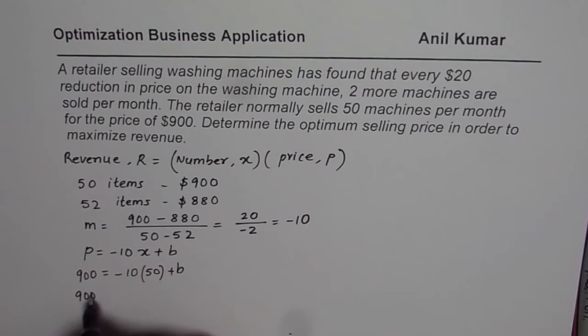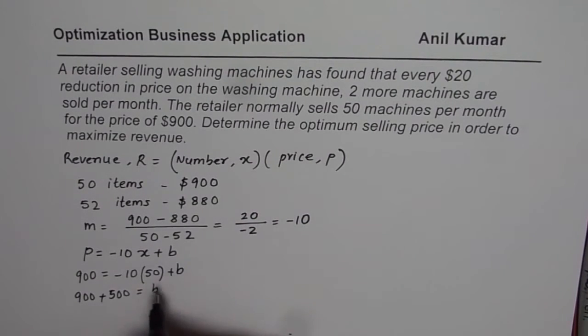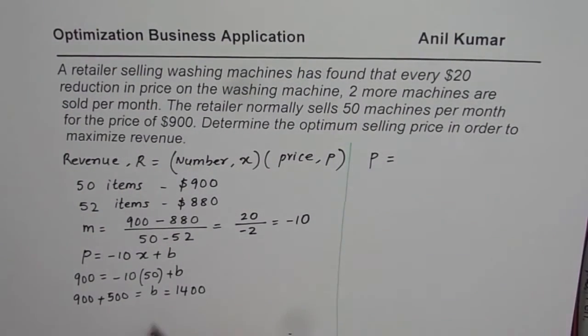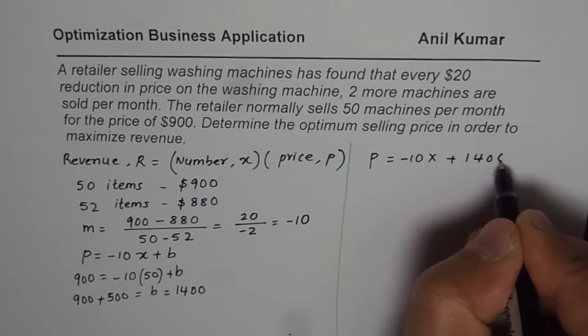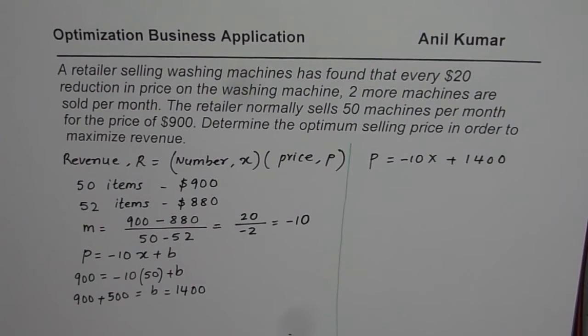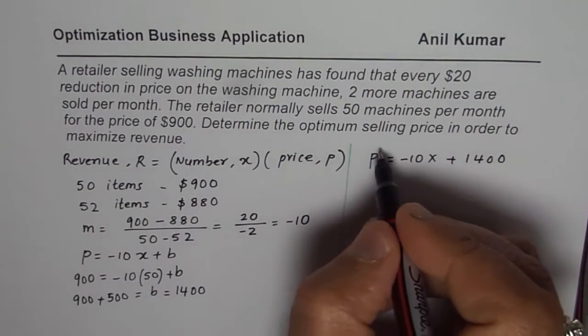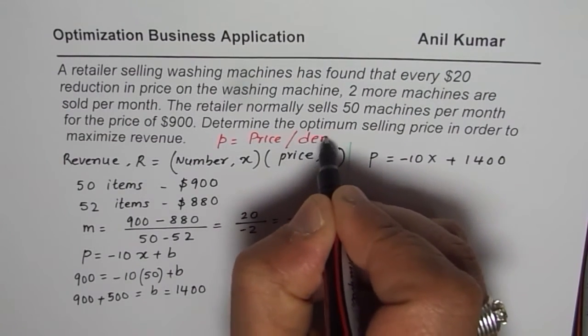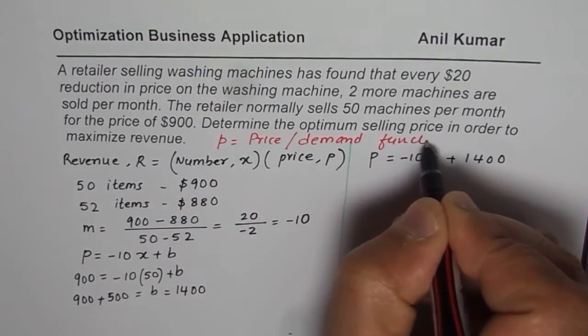We get 900 plus 50 times 10 is 500. That is the value of B, and this is equals to 1400. So that gives us the relation between the price function and the number of items sold. We can write down now our equation as price function P is equal to minus 10X plus 1400. That is the price function. Sometimes we also call it demand function.